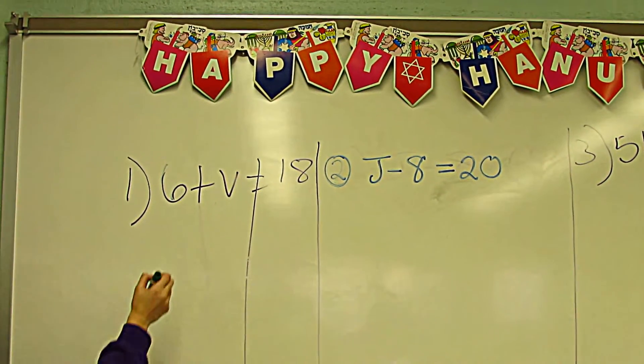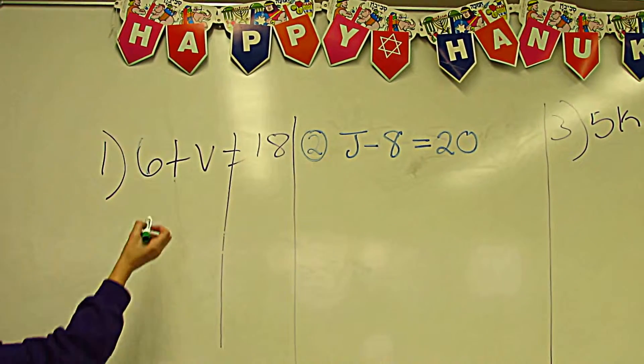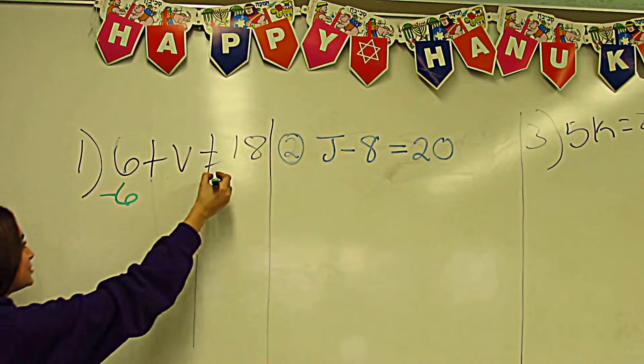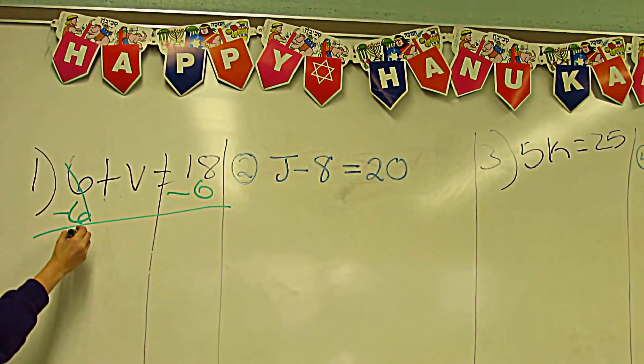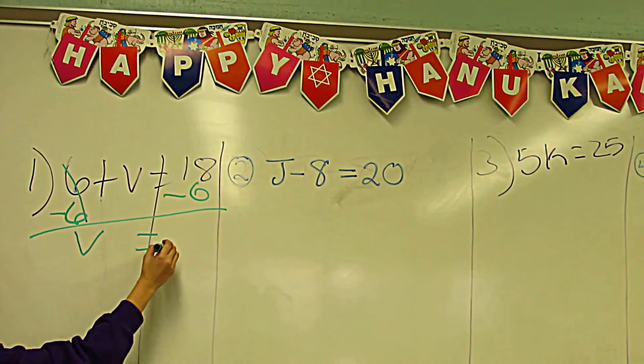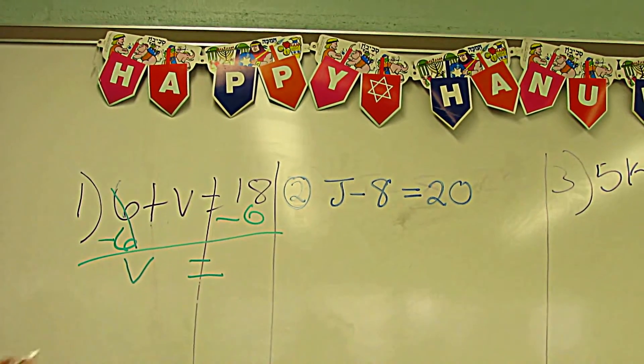Six plus V is equal to eighteen. You want to do the opposite of addition, so it's subtracting. You want to subtract six from each side. That cancels out, so you're going to drop down the V. V is equal to eighteen minus six, and that's twelve.